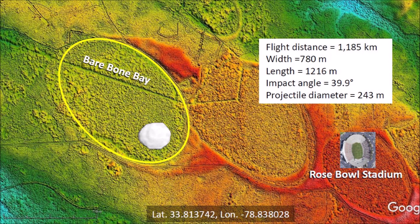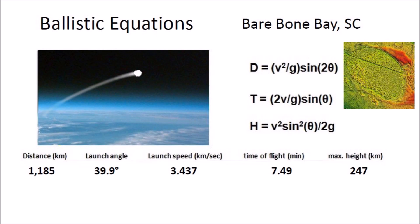Bare Bone Bay is located 1,185 kilometers from Saginaw Bay, which is assumed to be the point from which the ice boulder that made the bay was launched. The bay has a width of 780 meters and a length of 1,216 meters. The width-to-length ratio corresponds to an impact angle of 39.9 degrees. The diameter of the glacier ice projectile is estimated to be 243 meters — one-fifth of the bay length, or about the size of the Rose Bowl Stadium. The ballistic equations indicate the glacier ice boulder was launched at a speed of 3.437 kilometers per second, with a flight time of 7.49 minutes.